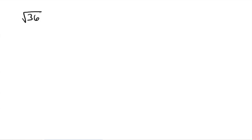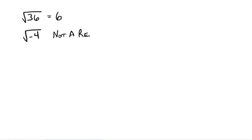The square root of 36 is asking us to find some number that we can square to get 36. Since we're talking about the principal square root, we know that number is 6. But what about the square root of negative 4? We're looking for some number that when we square it, we get negative 4. We know that if you square any real number, you get a positive number back — so this is called not a real number. We'll deal more with those later.